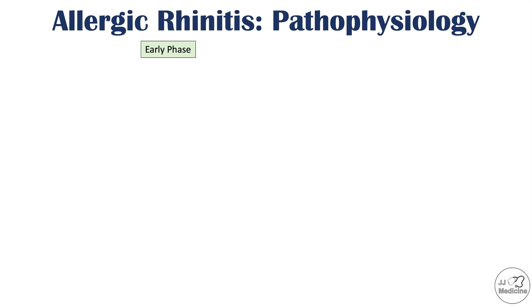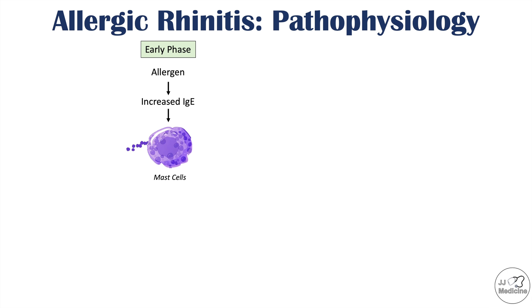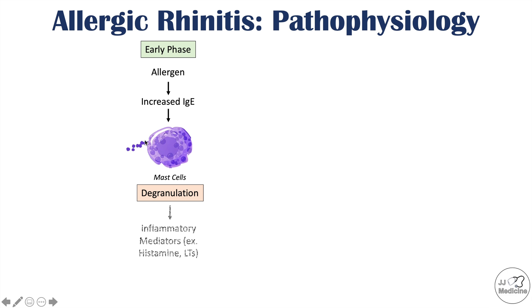There are two phases of allergic rhinitis. In the early phase, a patient is exposed to an allergen, which triggers an increase in IgE levels. That IgE binds and cross-links to mast cells, causing them to degranulate — releasing preformed vesicles of certain cytokines. This leads to the release of inflammatory mediators like histamine and leukotrienes, which can cause local inflammation.